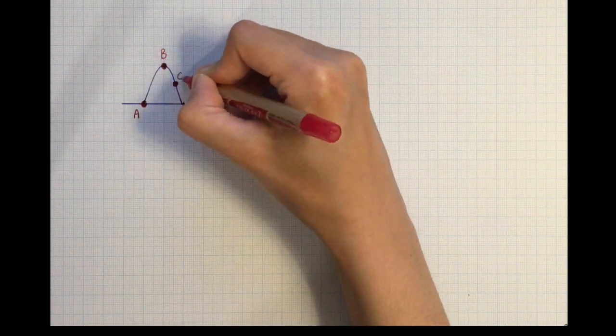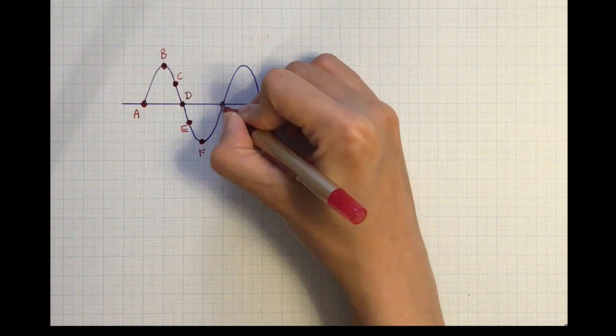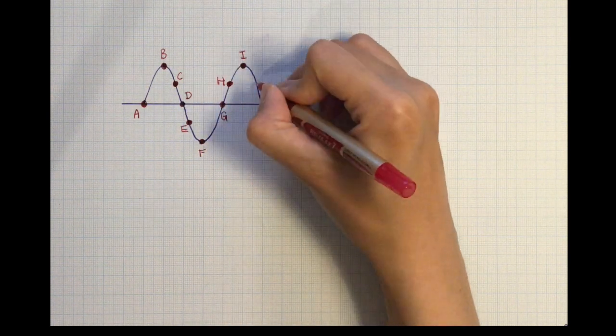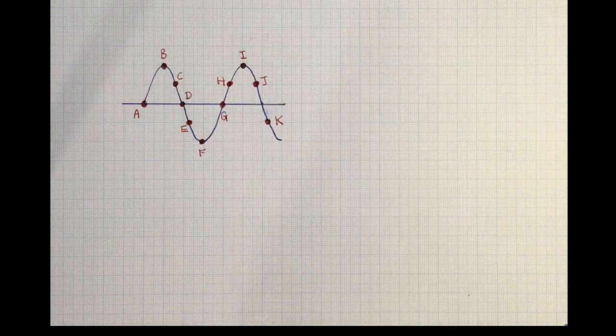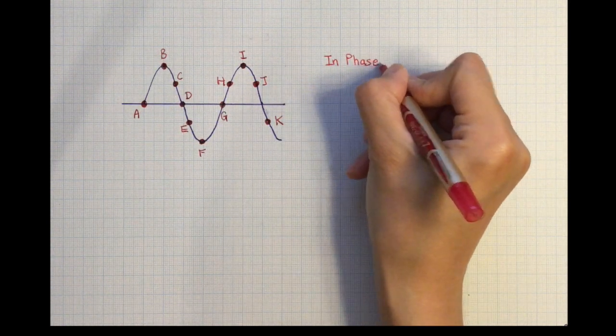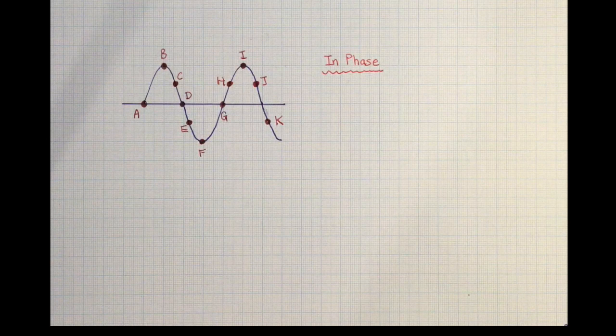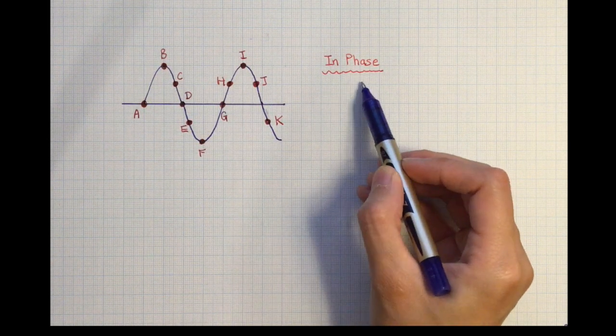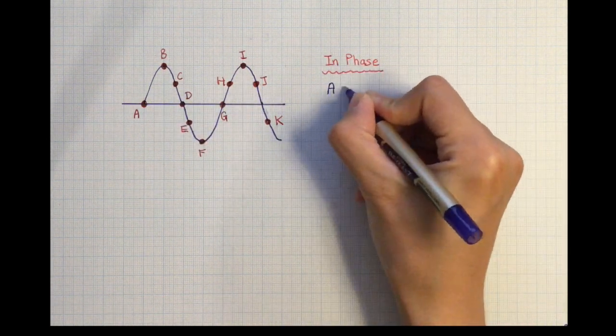Let's take a look at an example. I'll mark out different positions in a wave and compare them. Position A marks a phase of zero. The only other position that is in phase with position A is going to be G.